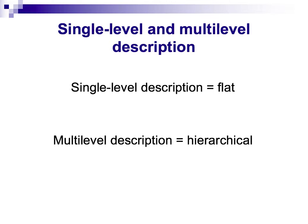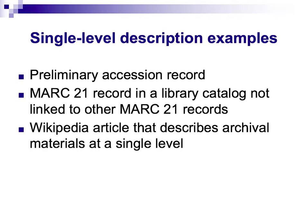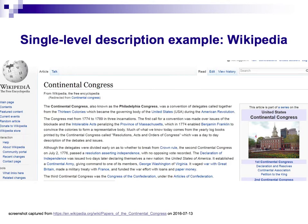In other words, single-level description is flat and multi-level description is hierarchical. DACS does not attempt to define the proper level of description for any set of archival materials. Archivists should follow the prescriptions of their institutions and apply their own judgment in making such determinations. Examples of single-level description include collection-level bibliographic records, preliminary accession records, collection-level Wikipedia entries, or even museum records. Here's one example.